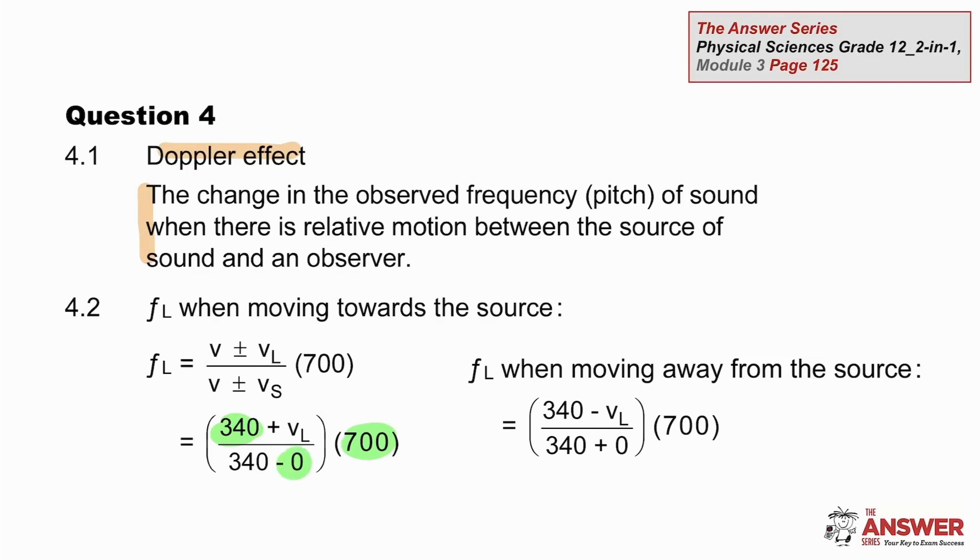We can substitute those values into both forms of the equation, moving towards and moving away. But that does leave us with a leftover problem. We have three unknowns in two equations. The frequency that the listener hears moving towards, different from the frequency that the listener hears moving away, and the velocity of the listener. So that is, three variables and only two equations.